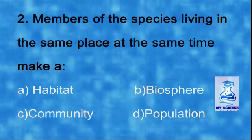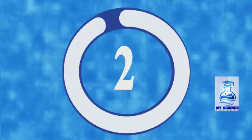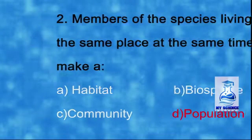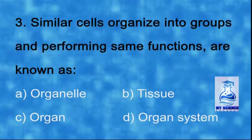Number two: members of the species living in the same place at the same time make a — a) habitat, b) biosphere, c) community, d) population. The correct option is d) population.